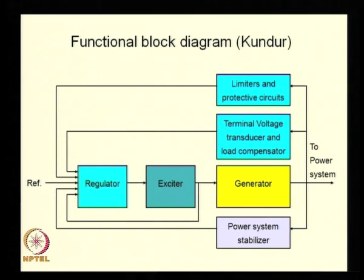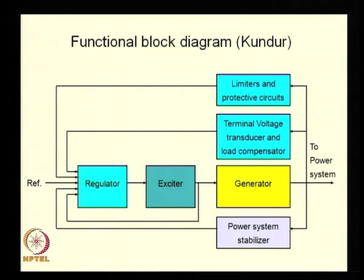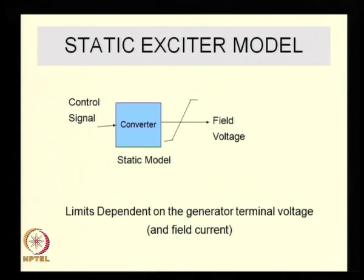We will use a simple model of an excitation system — a static exciter — and a generator connected to a power system. We will simply regulate the terminal voltage: the terminal voltage is measured and compared with the reference. We will not put any compensation for the load on the generator, so we will not have any component corresponding to the current output of the generator in the summing block. Simply, we will have V_ref minus V at the summing junction of the AVR. This is the model we will be using for the system.